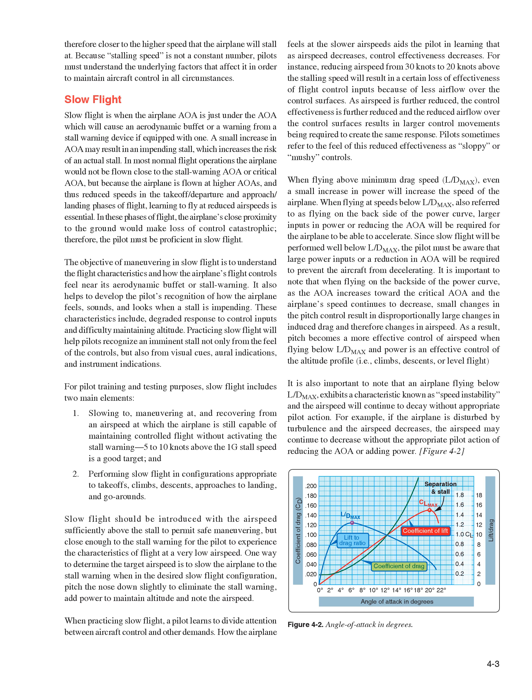As airspeed is further reduced, the reduced airflow over the control surfaces results in larger control movements being required to create the same response. Pilots sometimes refer to this reduced effectiveness as sloppy or mushy controls. When flying above minimum drag speed, L/D MAX, even a small increase in power will increase the speed of the airplane. When flying at speeds below L/D MAX — also referred to as flying on the backside of the power curve — larger inputs in power or reducing the AOA will be required for the airplane to accelerate. Pitch becomes a more effective control of airspeed when flying below L/D MAX, and power is an effective control of the altitude profile, i.e., climbs, descents, or level flight.